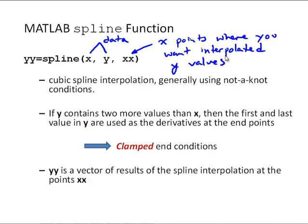And those y values could be one point or it could be multiple values. And those y values are output to the main output, yy. The default here will use not-a-knot end conditions. But if y contains two more values than x, then the spline function will interpret the first and last values in y as the derivatives at the end points. So this is how you would use the spline function to implement clamped end conditions.